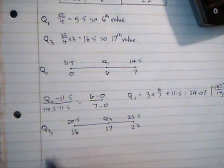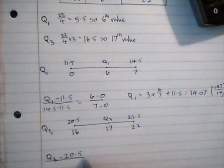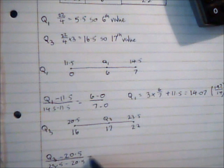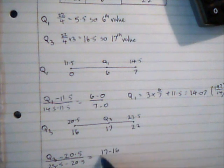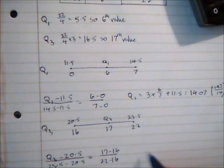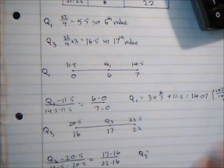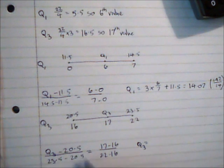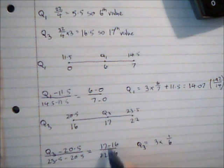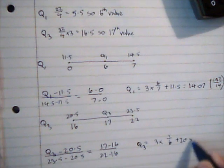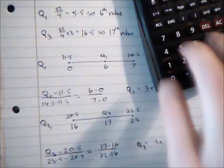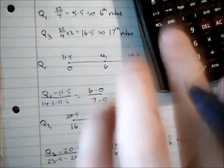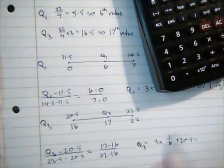So I've got here Q3 minus 20.5 over 23.5 minus 20.5 is equal to 17 minus 16 over 22 minus 16. And therefore Q3 is going to be equal to 23.5 minus 20.5 is 3, so 3 multiplied by 1 over 6, which is that simplified, add 20.5. So that gives me a value of 21.